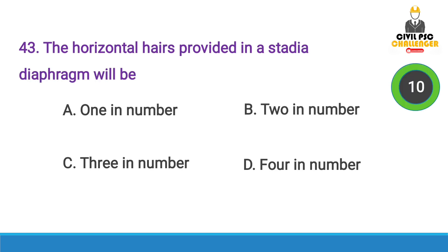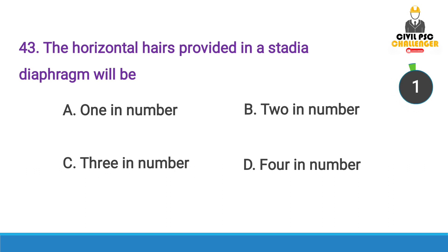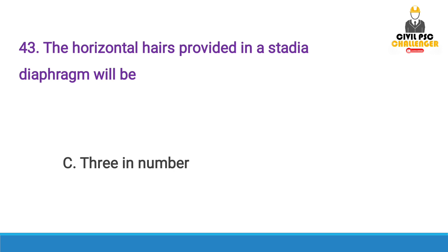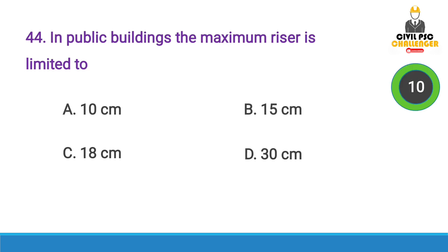Next question: The horizontal hairs provided in a stadia diaphragm will be — Answer option C, 3 in number.